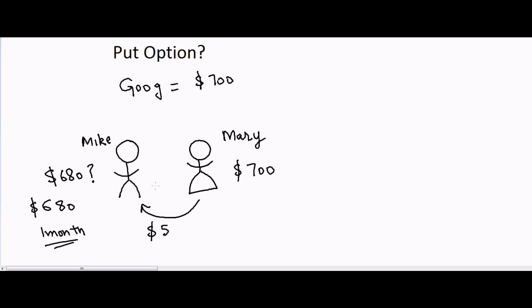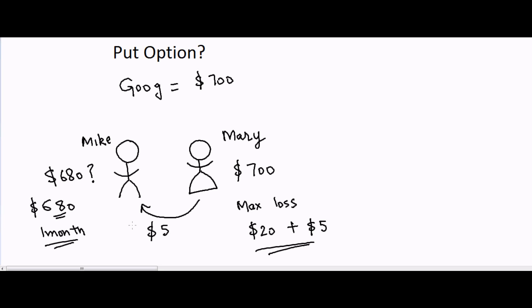Because Mike promises to buy the stock even if it goes below $680, Mary has downside protection. Her maximum loss is capped at $20 — the difference down to $680 — plus the $5 she paid as premium. So her worst case is $25. Mike is happy because he made $5, and if the stock falls to $650 he can buy at $680 minus the $5 premium, effectively paying $675.